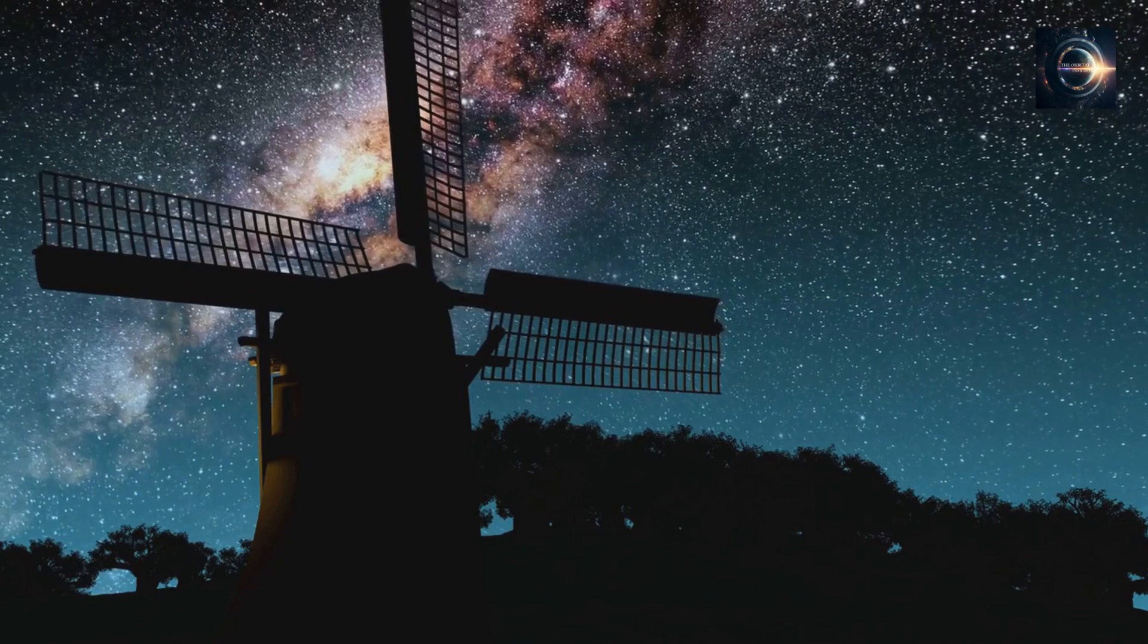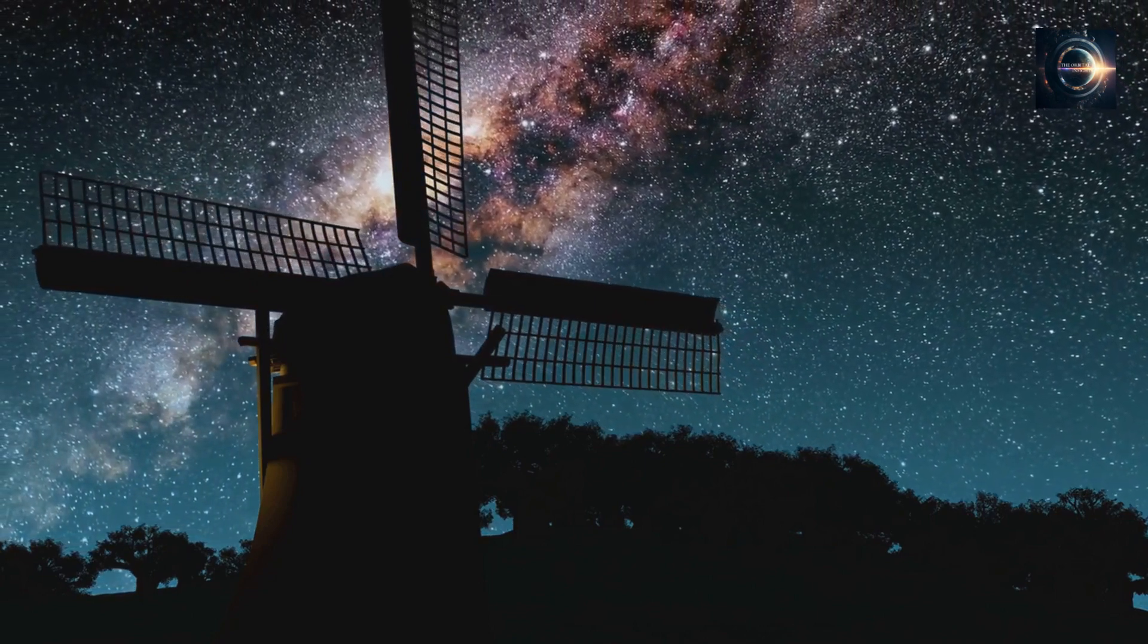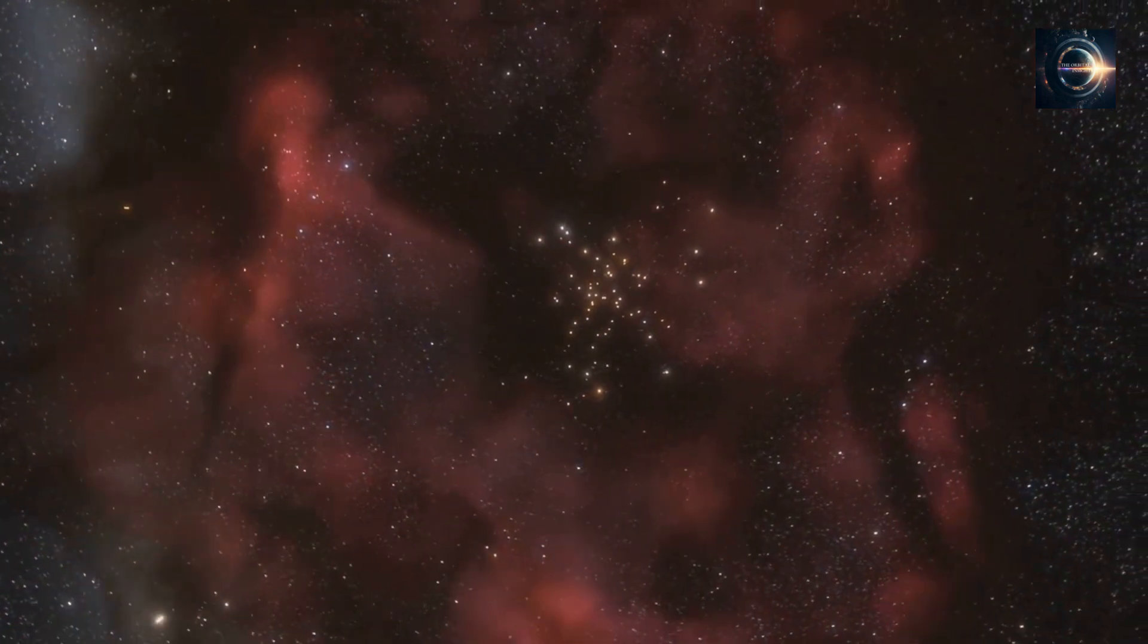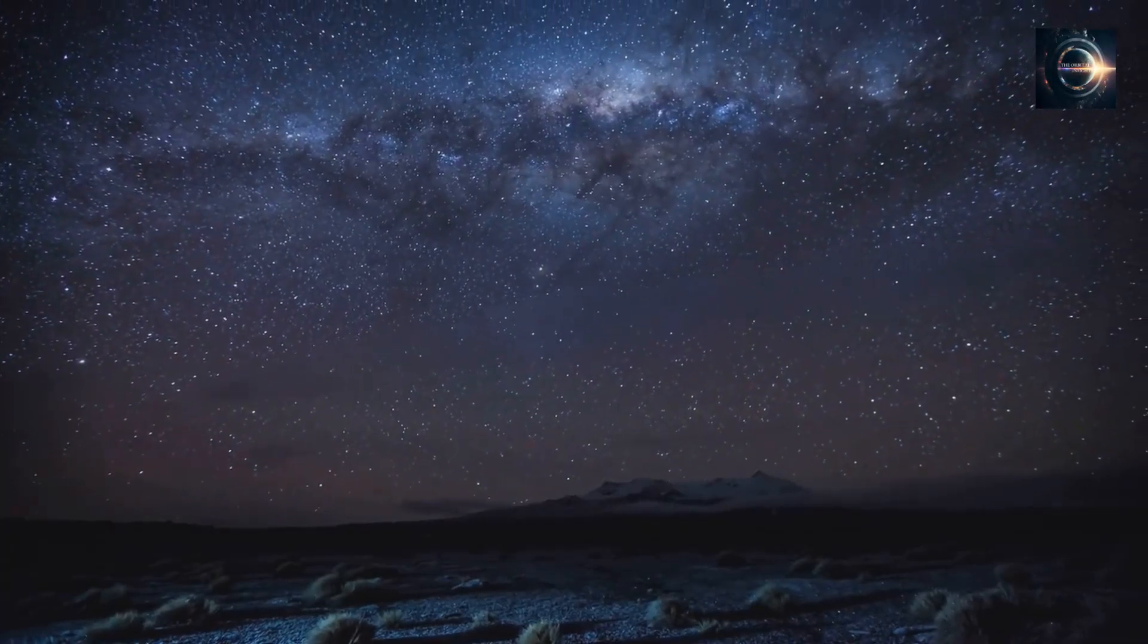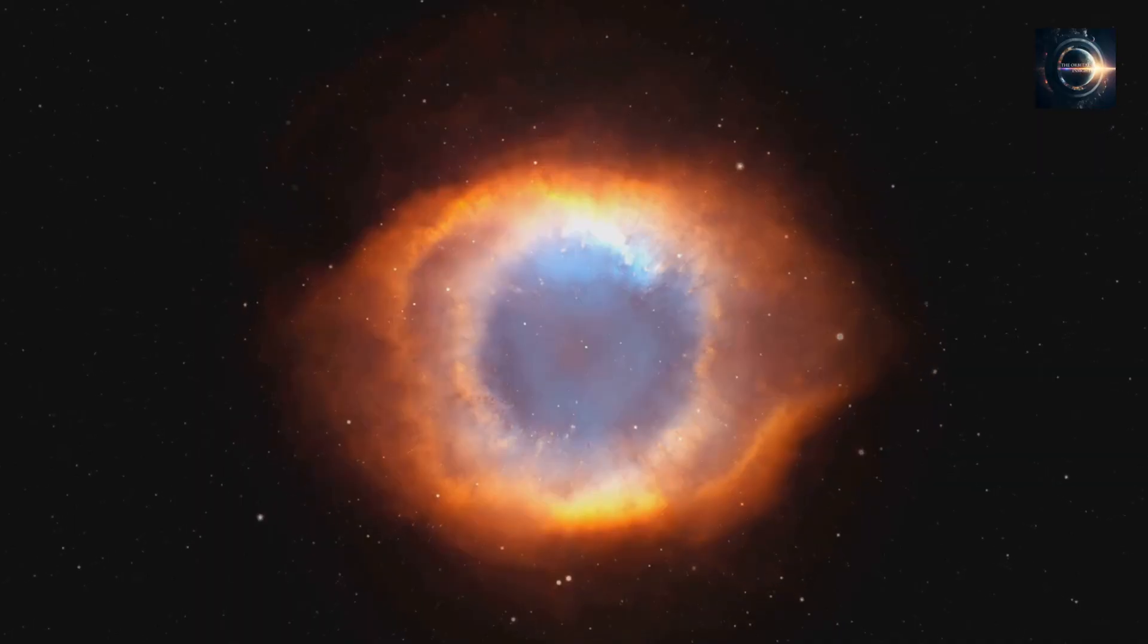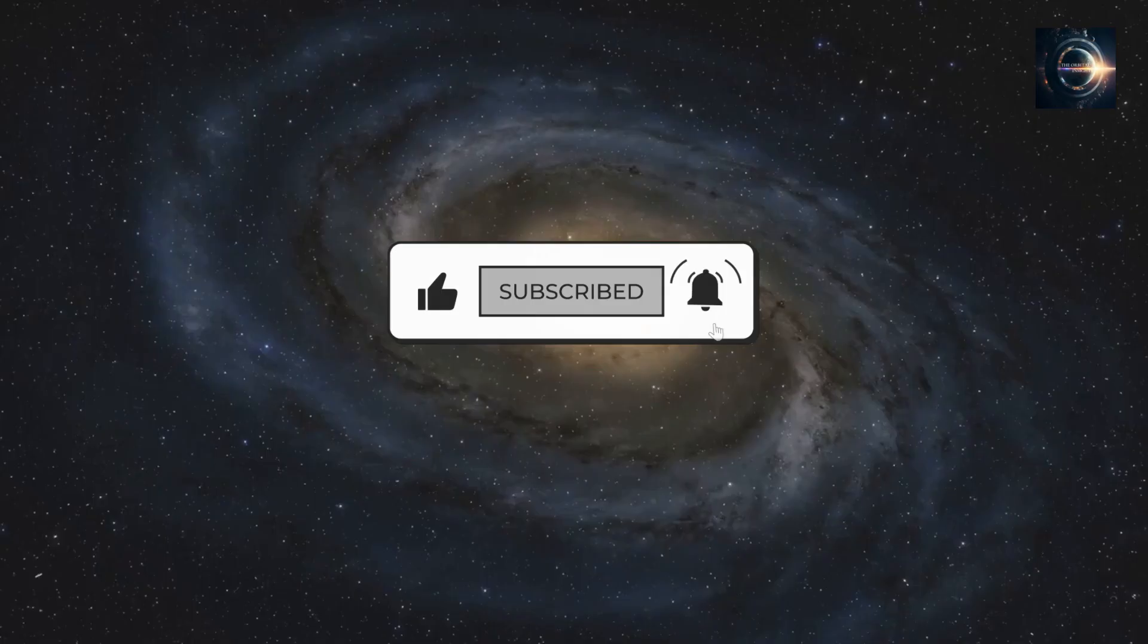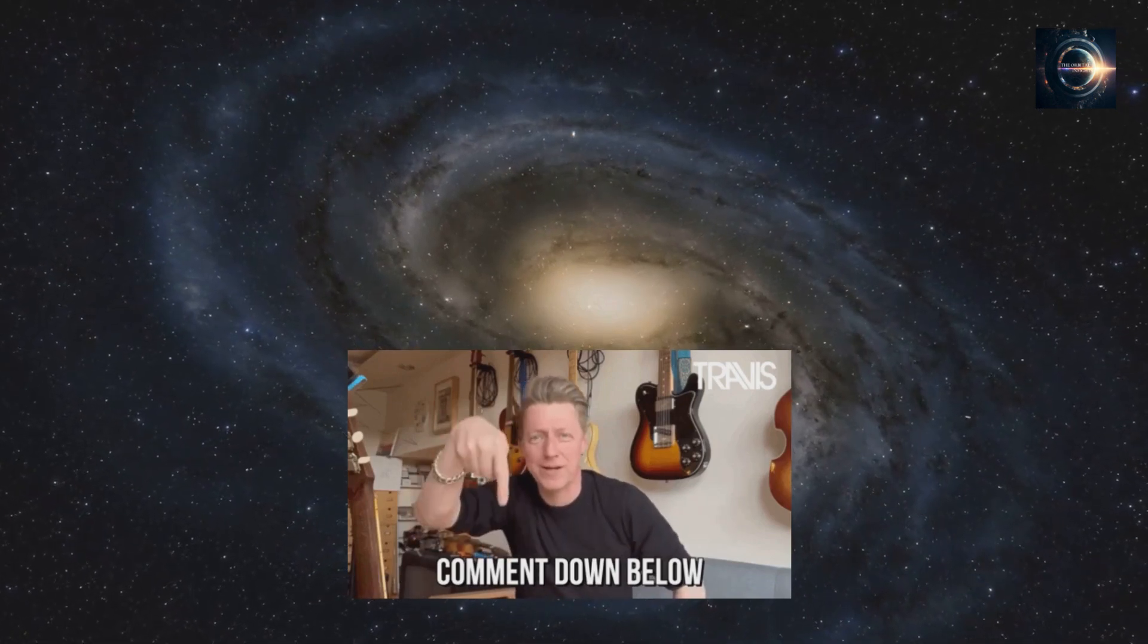So there you have it, folks. The discovery of the first dark galaxy is a significant milestone in the field of astronomy. The fact that astronomers can detect galaxies without relying on visible light opens up a whole new avenue of research. This discovery may help us solve one of the biggest mysteries in extra-galactic astronomy, the missing satellite problem. But for that, we need your help. If you liked this video, please hit the like button and subscribe to our channel for more exciting content. If you have any questions or comments about the topic we discussed, please leave them in the comment section below. Until next time, stay curious about space.